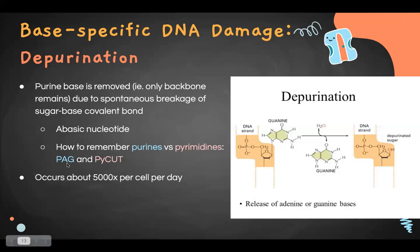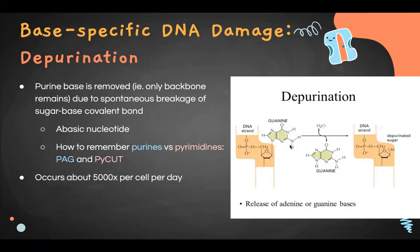A helpful acronym: purines are A's and G's (adenine and guanine), and pyrimidines are C's, U's, and T's. Purines have two rings and pyrimidines have one ring — a trick to remember is that the shorter word 'purine' corresponds to the larger molecule. Depurination occurs about 5,000 times per cell per day, making it quite frequent.